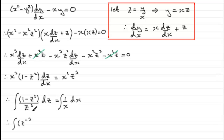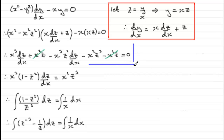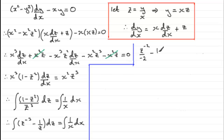Integrating z⁻³ gives z⁻²/(−2), and the integral of minus 1/z gives minus ln(z). On the right side, the integral of 1/x with respect to x is ln(x) plus the constant of integration c.